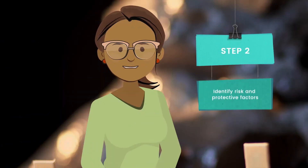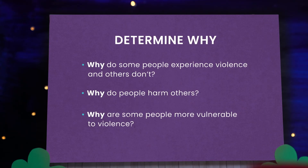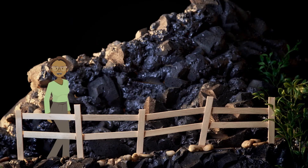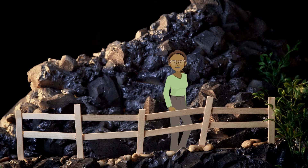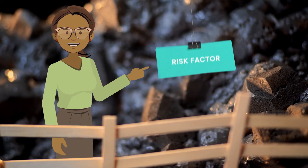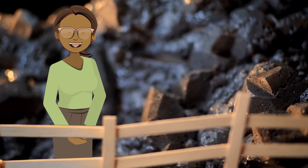Step two of the public health approach helps to answer the question why. Why does one person experience violence while another does not? Why does someone harm another person? Why are some communities more vulnerable to violence than others? During the second step, you will identify risk and protective factors, which help us determine where prevention efforts need to be focused. A risk factor increases the likelihood that someone will experience violence. However, just because a risk factor is present does not mean a person will definitely experience violence, as violence results from a combination of many factors.